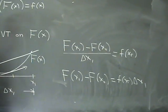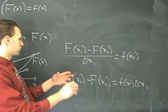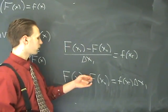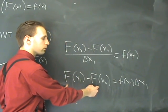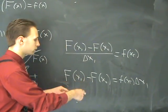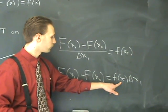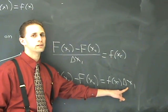We're going to need this relationship, which describes the relation between the anti-derivative of little f at the endpoints and the value of f itself times a little change in x.